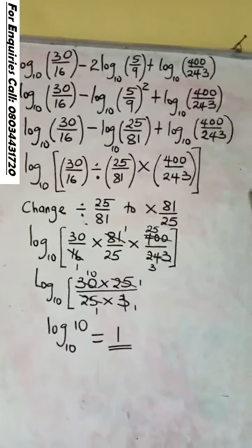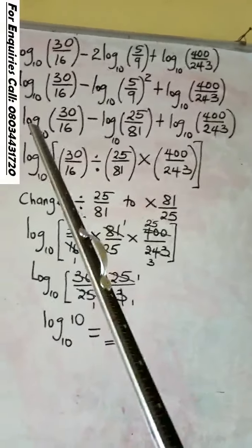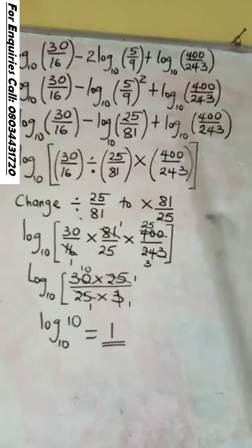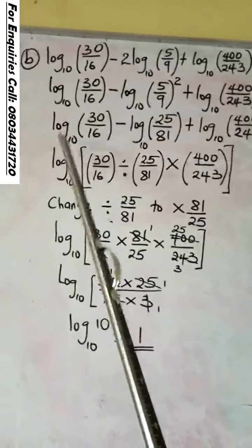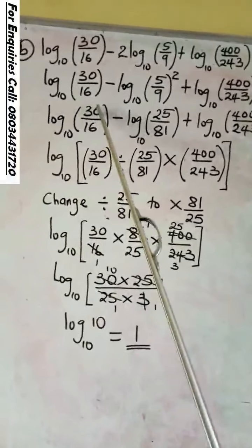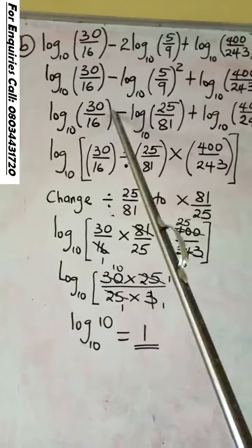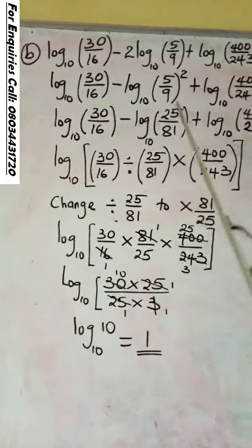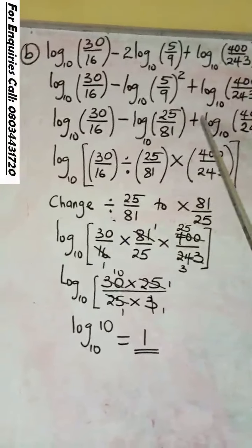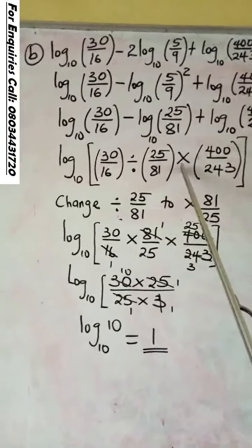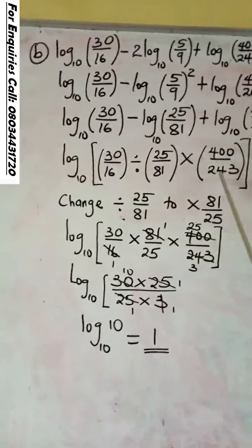The next step is to take one of the logs since all of them are on the same base. Base 10, base 10, base 10. Pick one. It will be 30 over 16 minus return to division. You pull the division sign: 25 over 81 plus return to multiplication. You pull the multiplication times 400 over 243.